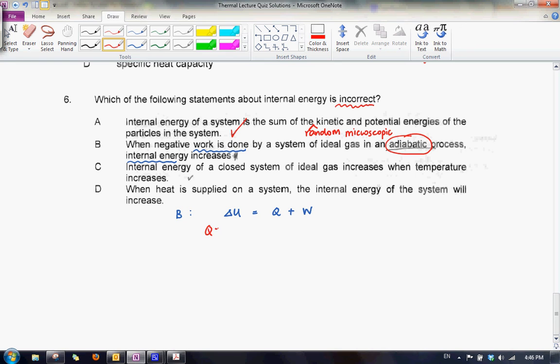And since this is an adiabatic process, so what we have is Q is equals to 0. And since Q is equals to 0, the increase in internal energy is equals to the work done on the system. So in this case, this is actually a true statement. So this is also not the answer.